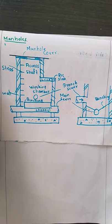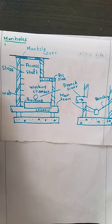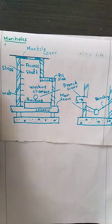Normal manholes are usually provided when the depth is around 1.5 meter. They are constructed either in square or rectangular form — on roads you can see rectangular openings with a manhole cover, typically 1 by 1 meter. Deep manholes are manholes where the depth is more than 1.5 meter; any manhole deeper than 1.5 meter is called a deep manhole.